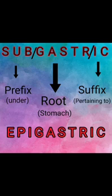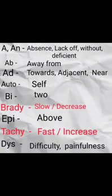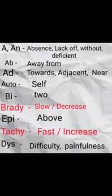Let's look at the prefix A or An — A means absence, lack of, or without. For example, anuria — A means absence of urine. Apnea means absence of breathing.